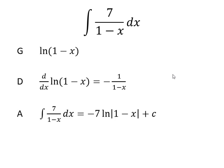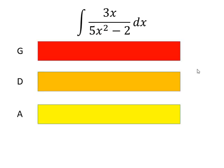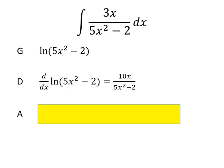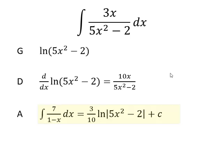Now let's look at a slightly trickier one. Here the denominator is a quadratic: 5x² − 2. If we differentiate that, we get 10x, so at the top it looks like we've got some multiple of 10x. Our guess is ln of the denominator. We differentiate using the chain rule, bringing 10x to the top with (5x² − 2) at the bottom. To get from my derivative to the original function I need to divide by 10 and multiply by 3, which is the same as multiplying by 3/10. So the answer is (3/10)·ln|5x² − 2| + c.